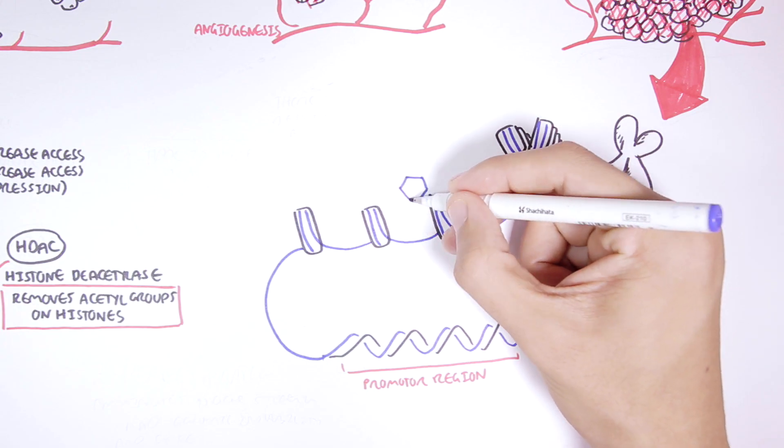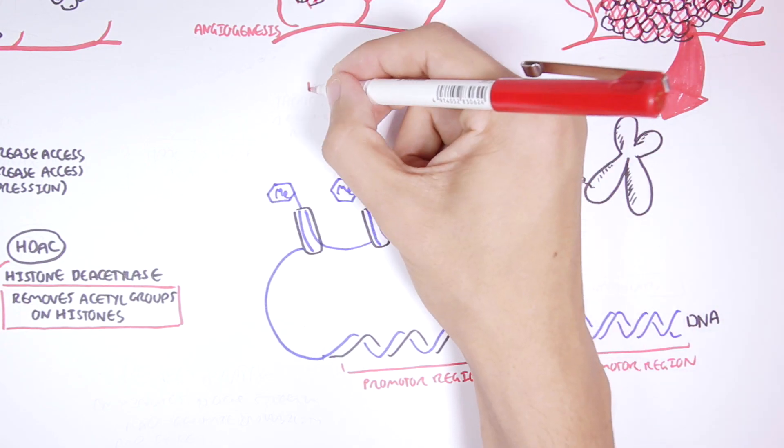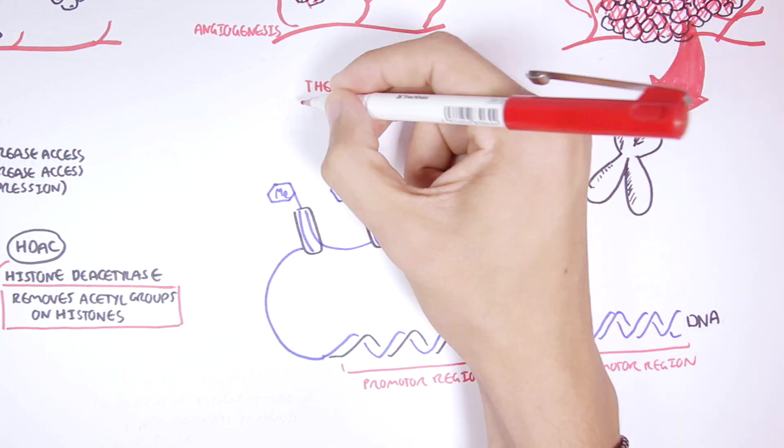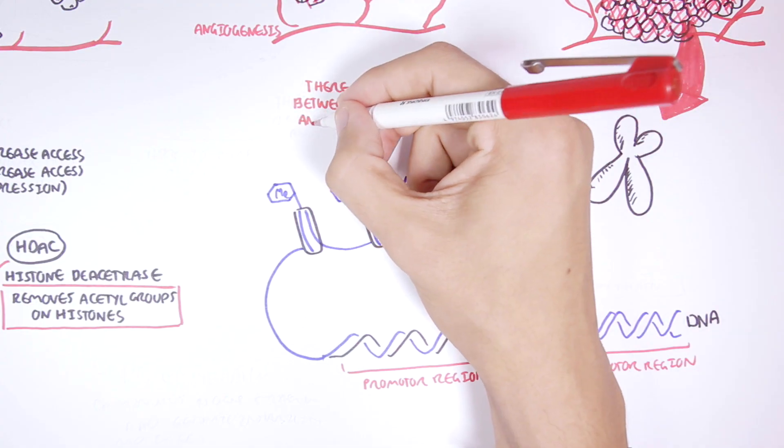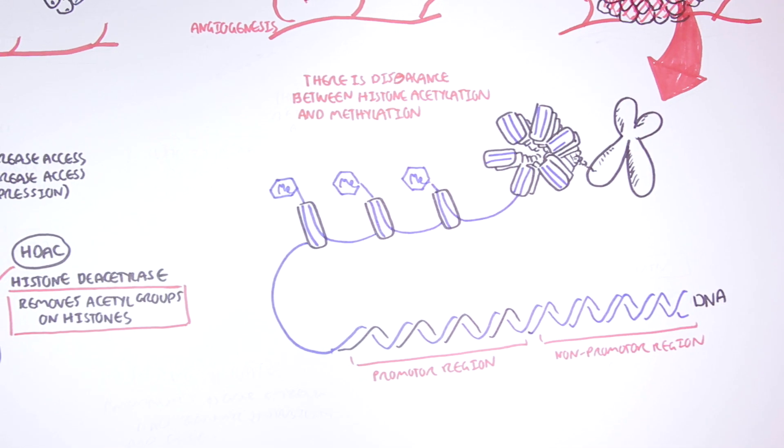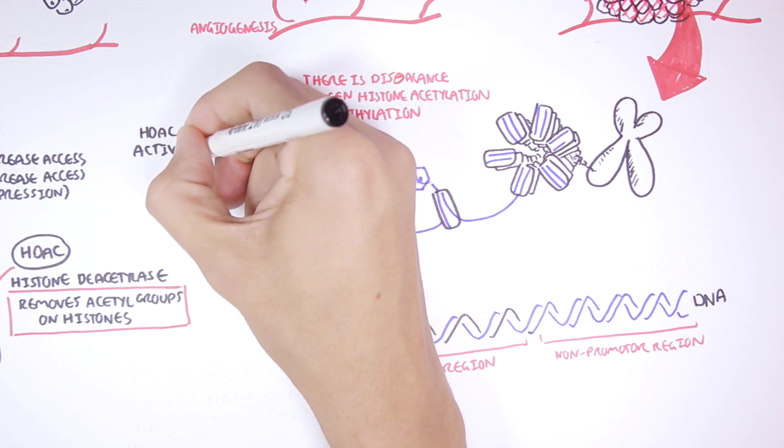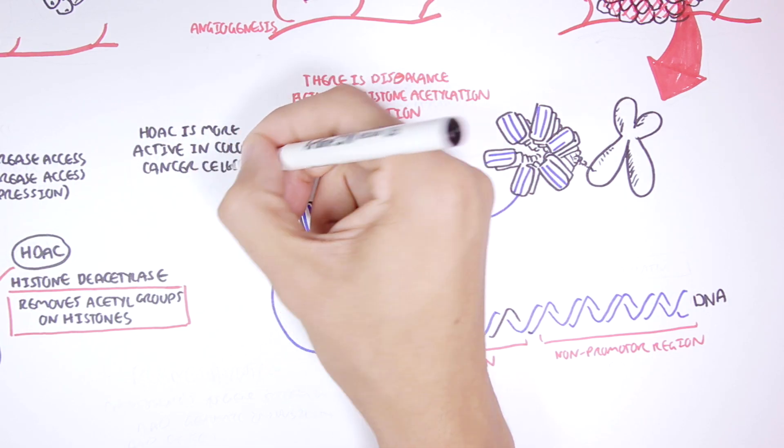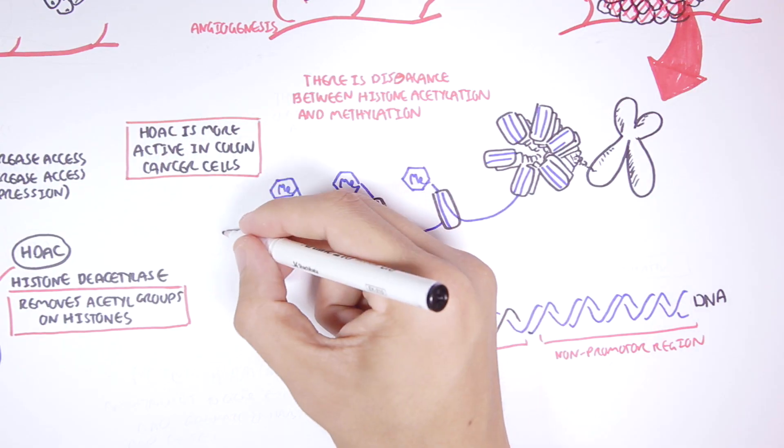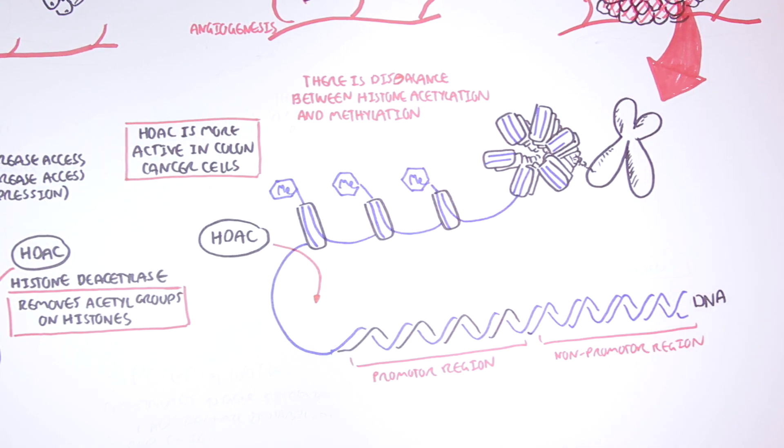In cancer cells, there is a disbalance between histone acetylation and histone methylation. So we see more methylated histones. Remember, methylation decreases access to transcription factors. One reason why we see more methylation is because of HDAC, the enzyme, which appears to be more active in colon cancer cells. So here, HDAC is removing all the acetyl groups on histones, resulting in more methylated histones.